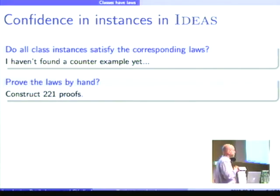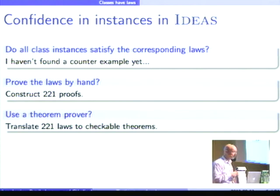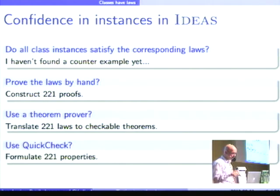So, what could I do? Well, I could try to prove all these laws by hand. 221 proofs. I'm not going to do that, of course. I could try to ship off the laws to a theorem prover. That would be nice. But that requires an interface there.